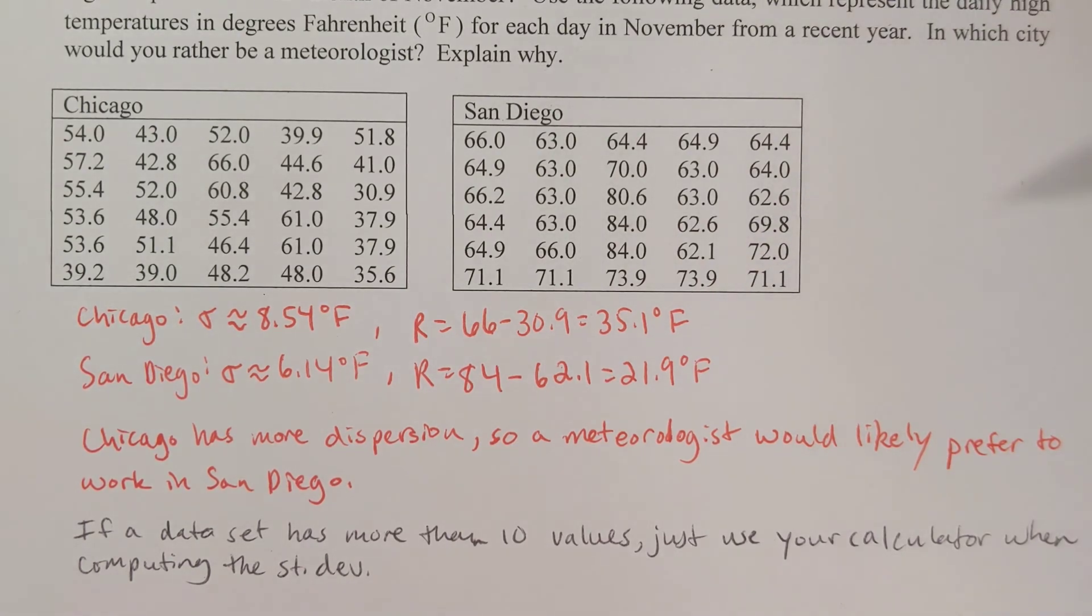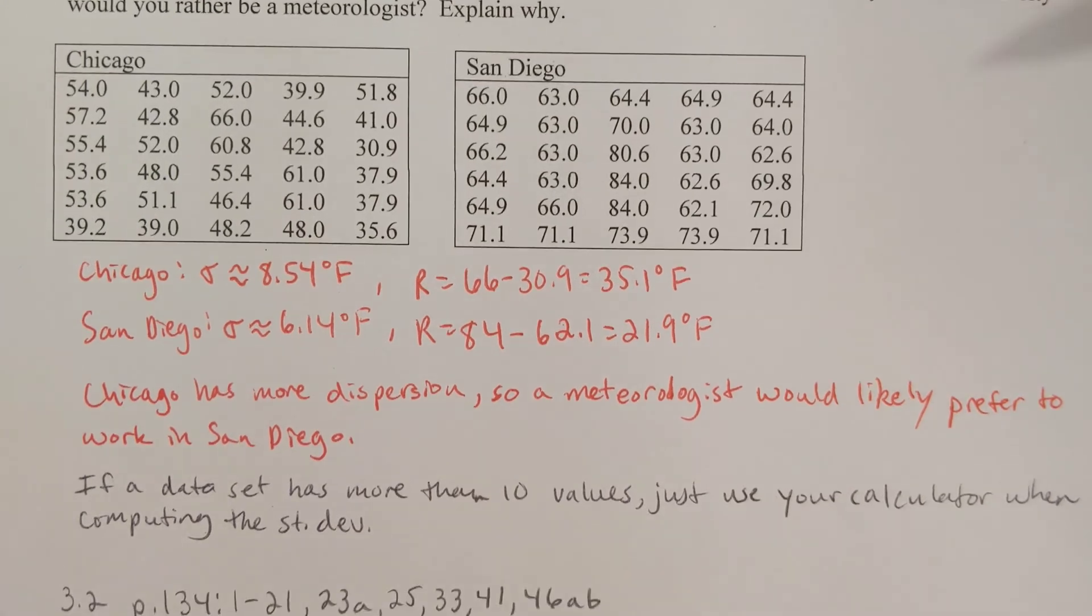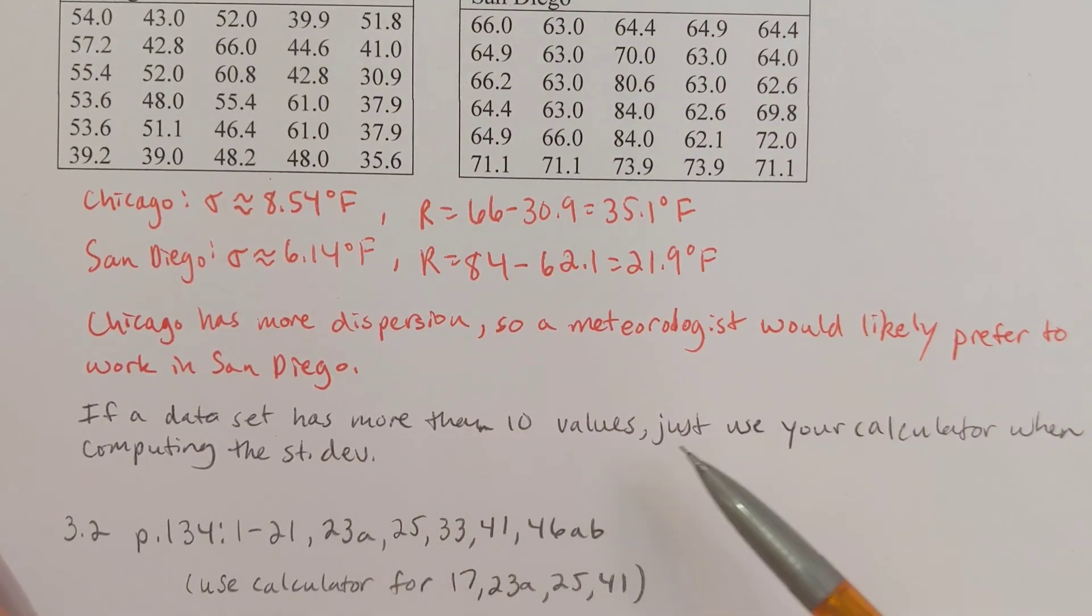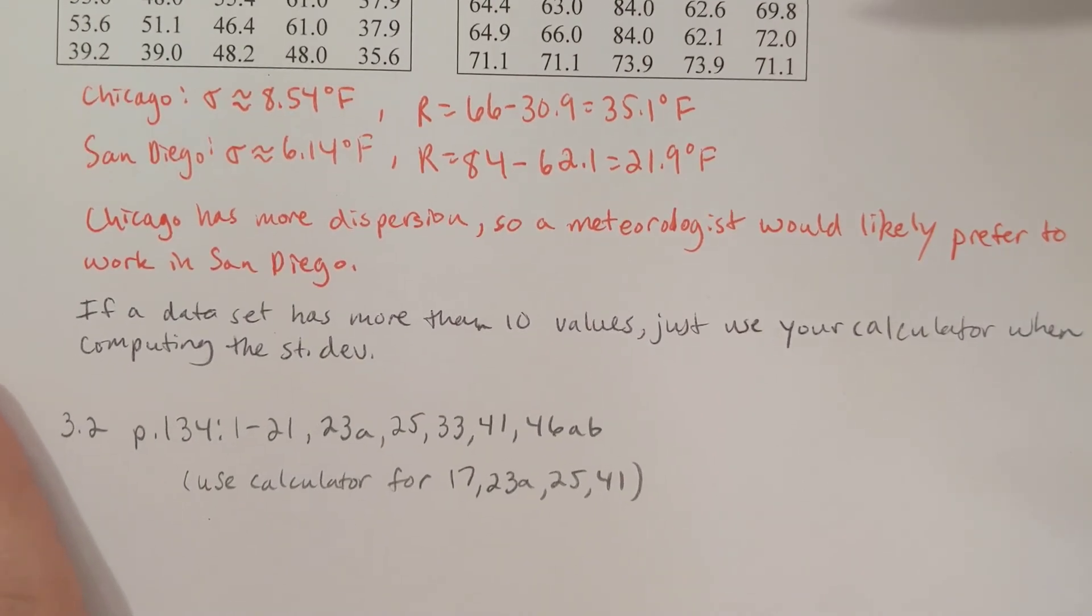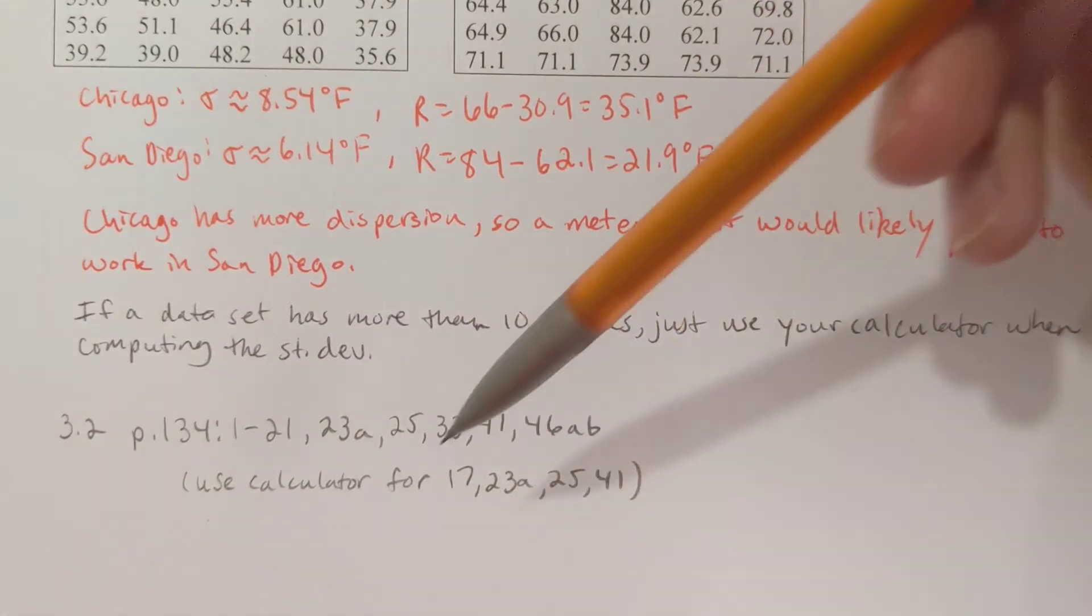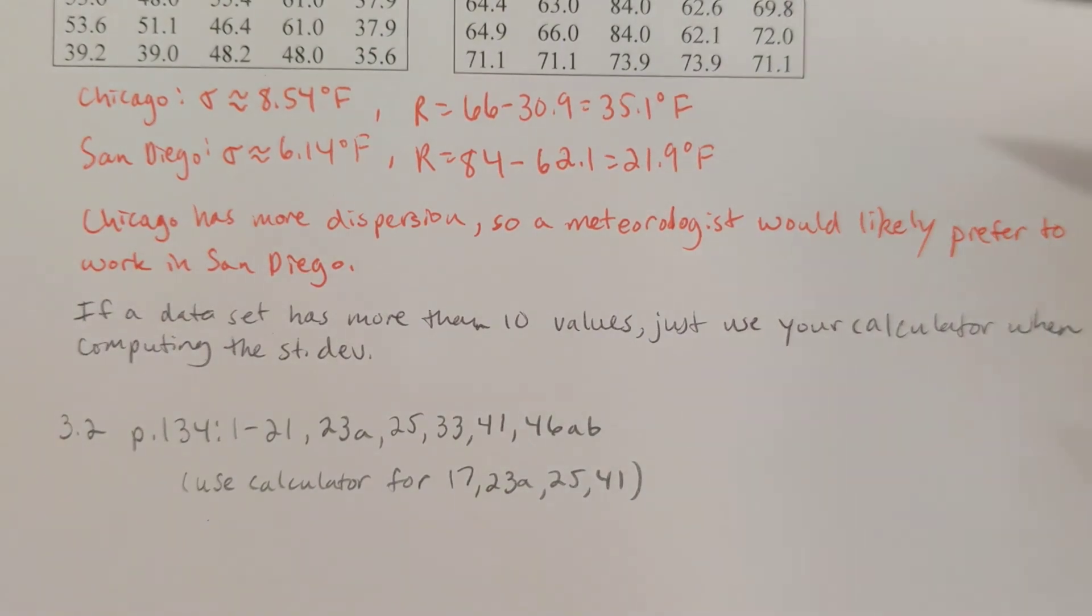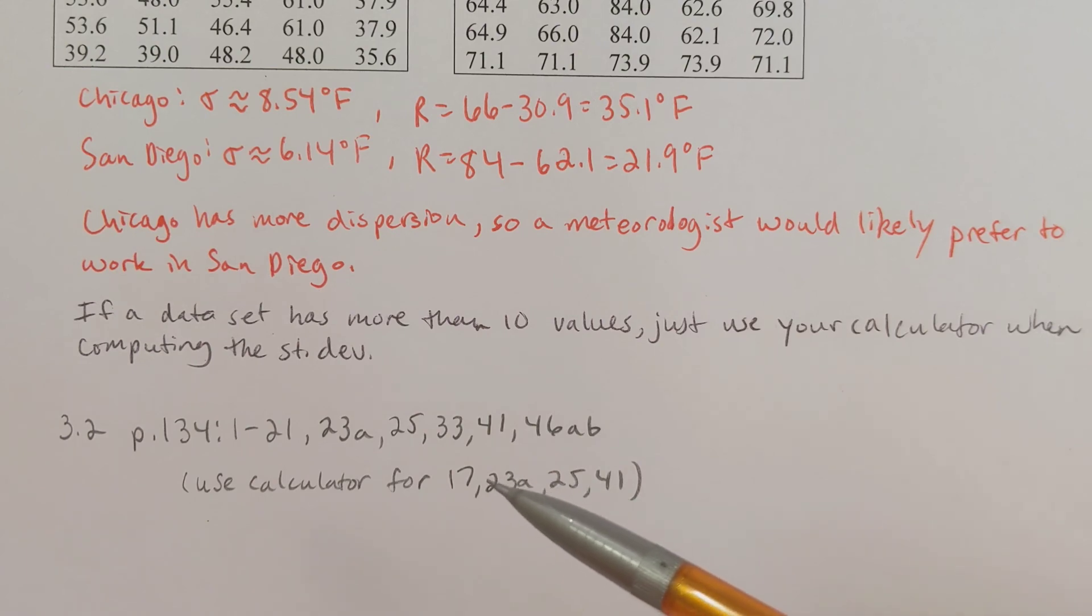Just an example using the calculator. Now if a data set has more than 10 values, just use your calculator when computing the standard deviation. In section 3.2, here's the problems that I'd like you to look at in the book. The problems in the book that have more than 10 values would be problem 17, problem 23, and then problem 25 and then problem 41. Just use your calculator on those problems and it should be fine. All right, we'll go ahead and stop right there in the notes, and we'll pick up - we're going to skip 3.3 - and I'll start in on 3.4 then in the next video.